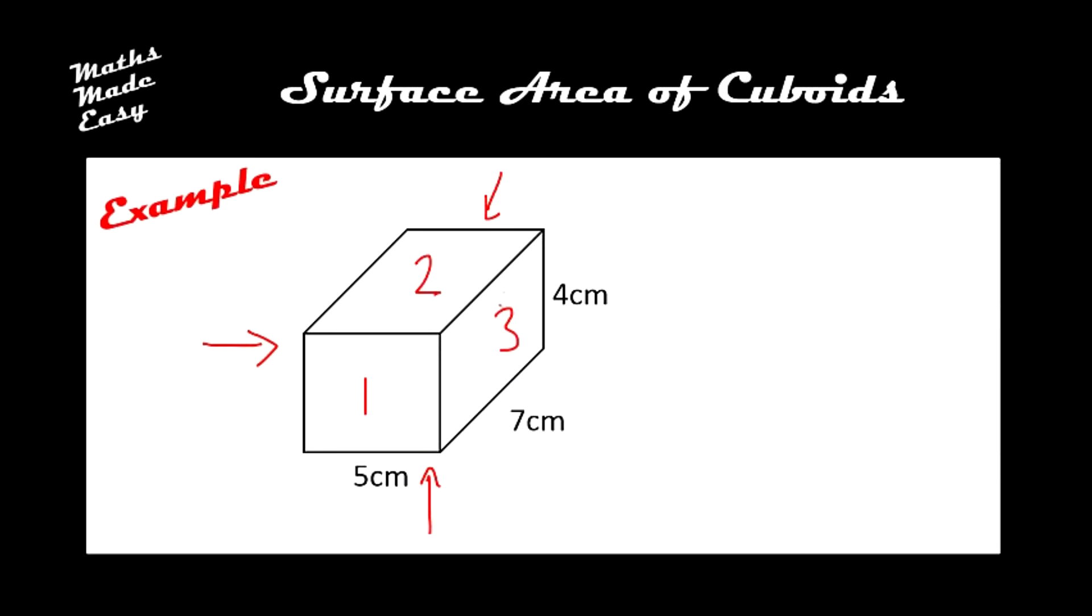So to find the area of all of these, what we can do is find the area of the 3 ones that we can see, and then since the 3 that we can't see are the same, just double what we get. So let's look at the 3 ones that we can see: 1, 2 and 3.